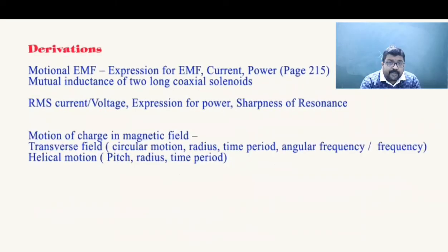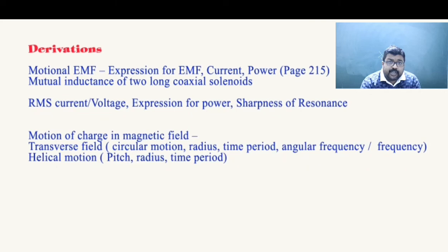Drift velocity — its relation with electric field, mobility, and finally Ohm's Law. Expression for motional EMF, then current, and then power. Expression for mutual inductance of a pair of solenoids. RMS current and RMS voltage — the relation between RMS and peak values and the physical significance of RMS values. Expression for power when alternating current flows through an inductor, resistor, capacitor, or a combination. Sharpness of resonance. Motion of a charged particle in a magnetic field: when the field is transverse the particle moves in a circular path — derive radius, time period, angular frequency, and frequency. For helical motion when the particle is projected at an angle, derive pitch and radius including time period.